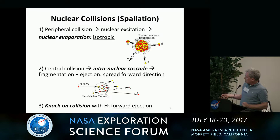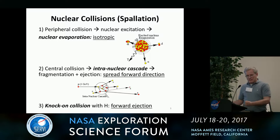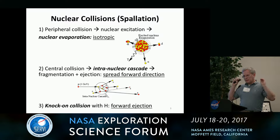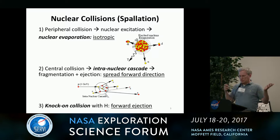The next two types — intranuclear cascades and knock-on collisions — both eject particles more or less in the direction of the incoming cosmic ray. An intranuclear cascade is like a bowling ball taking down bowling pins: you might get one or two nucleons coming back, but for the most part the target nucleus gets disrupted and fragments fly off in the forward direction. A knock-on collision is just like two billiard balls colliding: one hits the other, stops, and the struck one goes forward — again, forward directed.